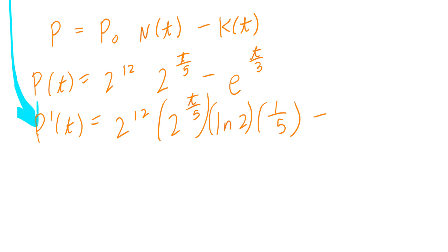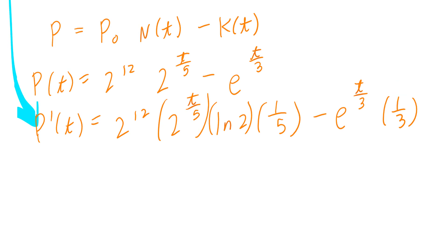Minus: when you take the derivative of e to the power of t divided by 3, it's going to be e to the power of t divided by 3 times the derivative of t divided by 3, which is 1 third. Once you find the derivative, you set this equal to 0. Your goal is to solve for t.